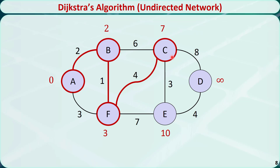Node C has two direct neighbors: node D and node E. The distance to node D is 7 plus 8 equals 15, which is smaller than positive infinity, so we replace it with 15. The distance to node E is 7 plus 3 equals 10, which is the same as the previous value, so we leave it at 10. Out of all the unvisited nodes, node E has the shortest distance. We have two options — move from C to E or from F to E — meaning the problem may have multiple shortest paths. I just randomly choose to move from C to E.